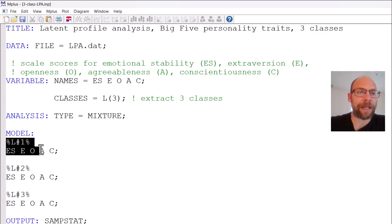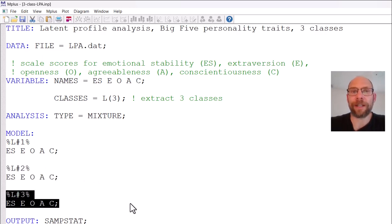This is my class specific statement for class 1. This is my class specific statement for class 2. And this is my class specific statement for class 3. By listing the variances there each time I'm freeing them up so that they will be estimated as independent parameters in each class.